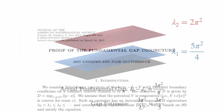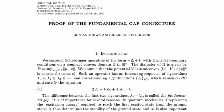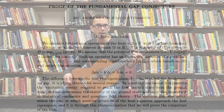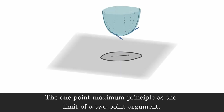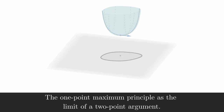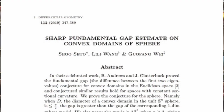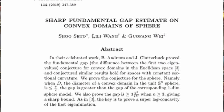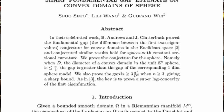In 2011, the conjecture was finally proven by Ben Andrews and Julie Clutterbuck for objects in Euclidean space. The proof used a two-point maximum principle, which is a generalization of the traditional maximum principle. A few years later, Xu-Jia Wang, Lili Lang, and Guofang Wei extended this argument to objects living within spherical geometry.